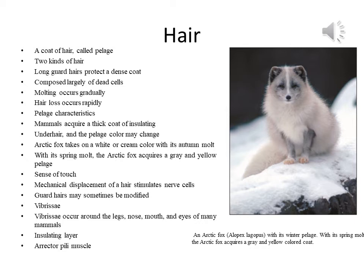In other mammals, hair loss occurs rapidly and may result in altered pelage characteristics. In the fall, many mammals acquire a thick coat of insulating under-hair and the pelage color may change. For example, the Arctic fox takes on a white or cream color with its autumn molt, which helps conceal the fox in a snowy environment. With its spring molt, the Arctic fox acquires a gray and yellow pelage.